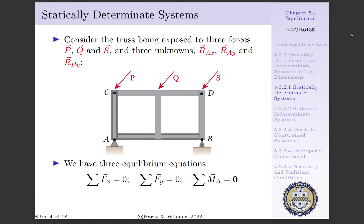Now let's consider a statically determinate system by looking at this truss. We have a truss structure that has a pin support at A and a roller support at B. We apply three loads P, Q, and S to our system. Our pin support provides reactionary force in the X and Y directions, and our roller support provides reactionary force in the Y direction.